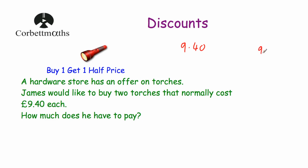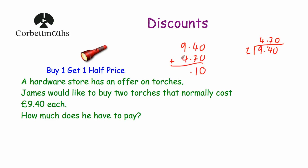Let's take £9.40 and divide it by 2. 9 divided by 2 goes 4 times remainder 1, 2 into 14 goes 7 times, and 2 into 0 goes 0 times. So £9.40 divided by 2 is £4.70. His first torch will be £9.40 and the second torch, which is half price, will be £4.70. To find how much James has to pay, we add those together: £9.40 plus £4.70. 0 + 0 = 0, 4 + 7 = 11, 9 + 4 + 1 = 14. So that's £14.10. James has to pay £14.10.